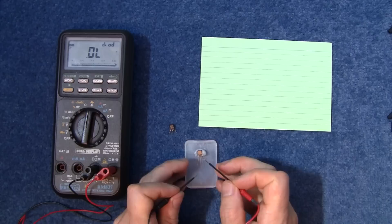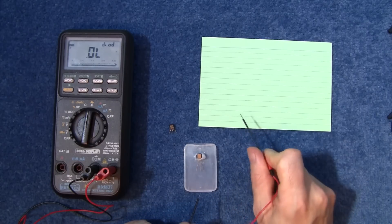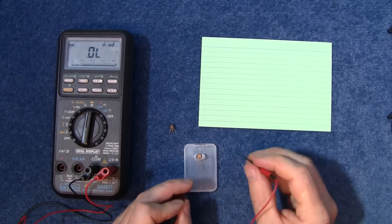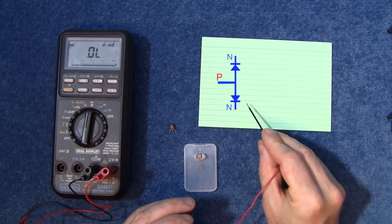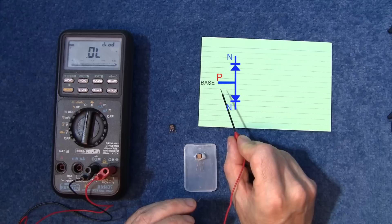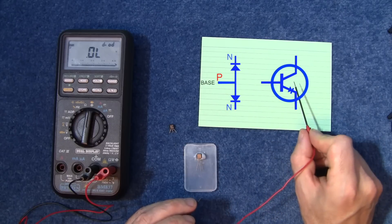So that is sort of working like this. You have the diodes sort of facing outwards there and that would be your base and that is the symbol for it.